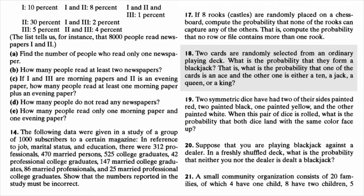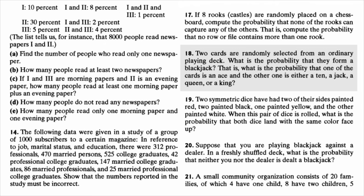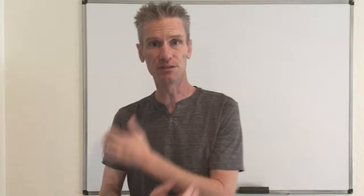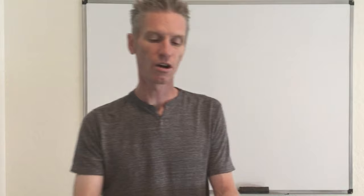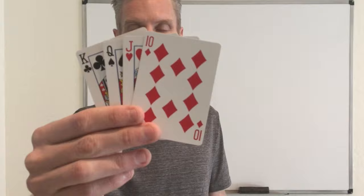The first problem 2.18 is about computing the probability of having a blackjack. You play blackjack with an ordinary deck of 52 cards, and instead of taking 5 cards you take only 2. A blackjack is basically the combination of an ace — one of the four aces is good enough — and one of the four denominations: 10, jack, queen, or king. That gives you a set of 16 cards to choose from.